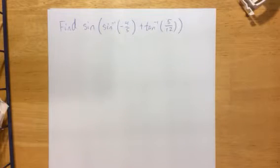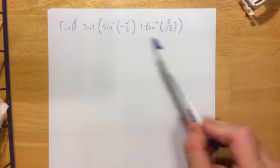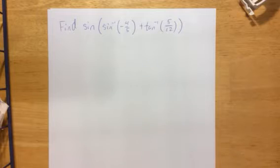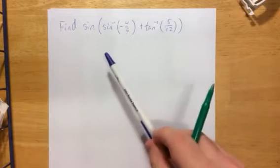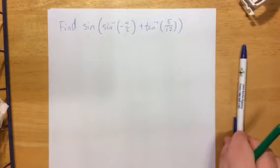Good day everyone, this is Professor Friday coming at you one more time. I've had a special request today for a composition of some trigonometric and inverse trigonometric functions. So what I have for you today is we're going to find the sine of the inverse sine of negative 4 fifths plus the inverse tangent of 5 twelfths.